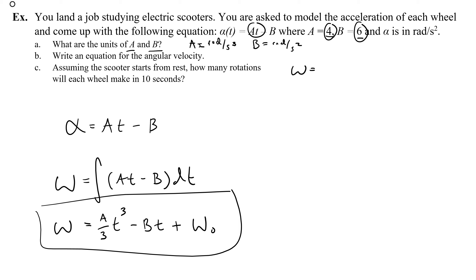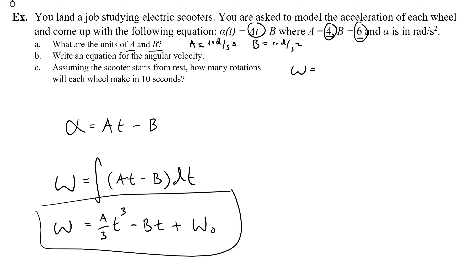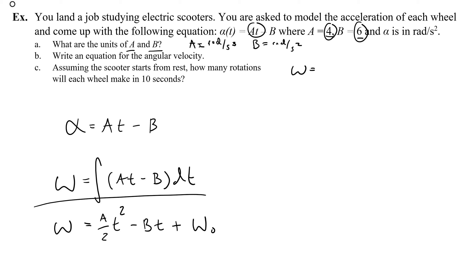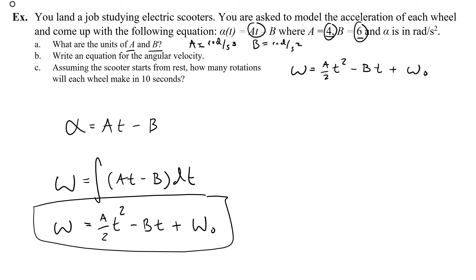Writing the angular velocity equation up cleanly — I initially made a slip writing t cubed, but correcting that: omega equals a over 2 times t squared minus bt plus omega naught.